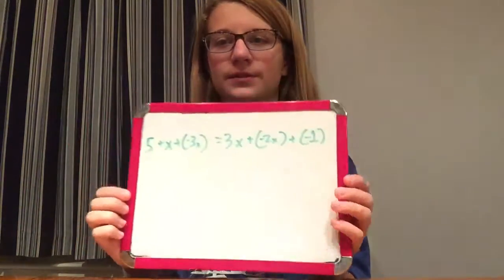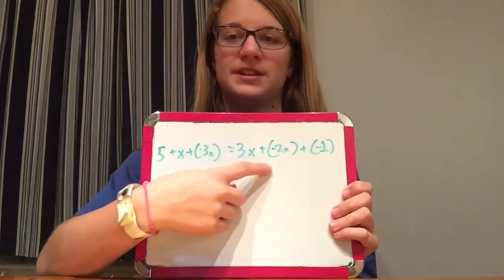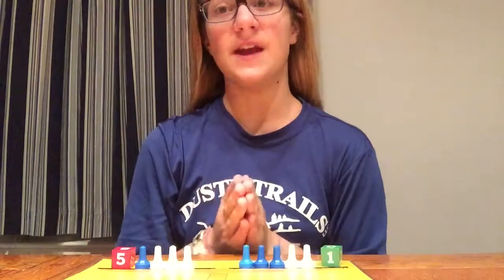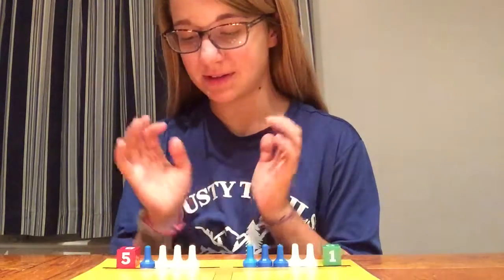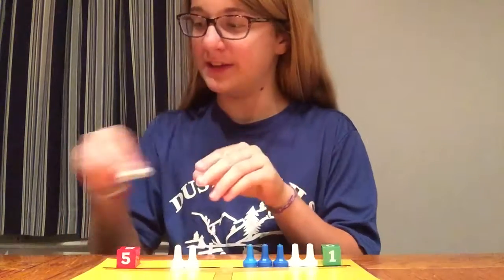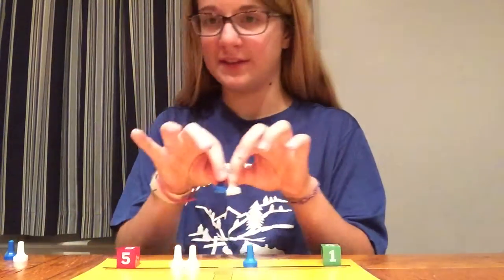For our final problem, we will be doing 5 plus x plus the opposite of 3x equals 3x plus the opposite of 2x plus 1. By the way, guys, I teleported — so if you're wondering why it's a different background, it's because I teleported. Now let's solve it. The first thing we're going to do is take out the pairs of 0. This does not change the scale — it's a legal move. So this is a pair of 0, this is a pair of 0, and this is a pair of 0.